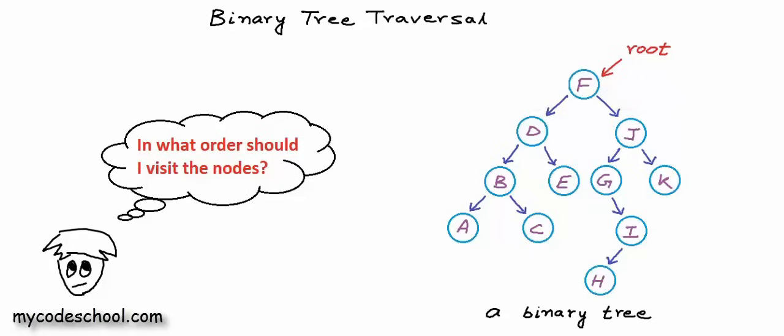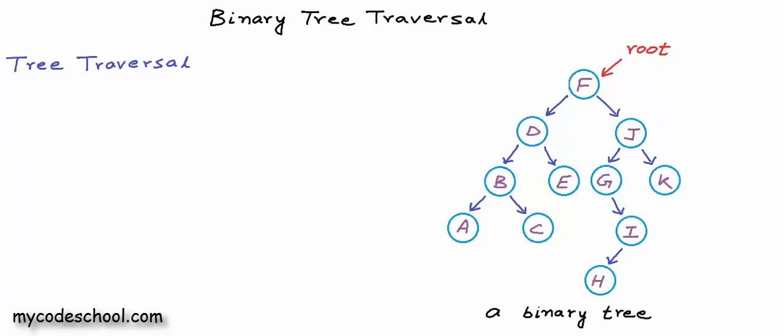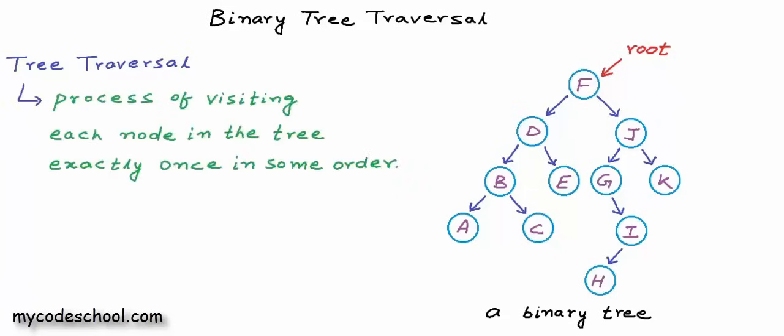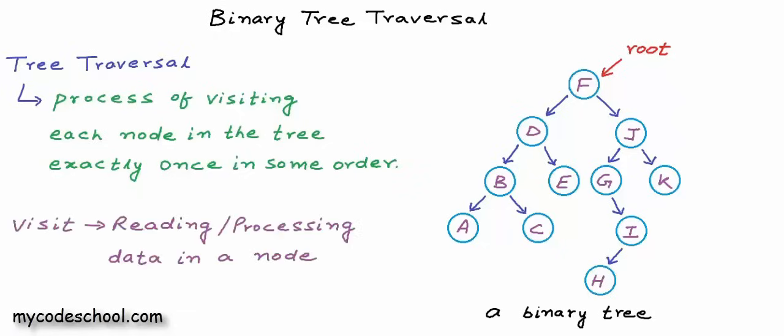Tree traversal is not so straightforward, and what we are going to discuss in this lesson is algorithms for tree traversal. Tree traversal can formally be defined as the process of visiting each node in the tree exactly once in some order. By visiting a node, we mean reading or processing data in the node. For us in this lesson, visit will mean printing the data in the node. Based on the order in which nodes are visited, tree traversal algorithms can broadly be classified into two categories.